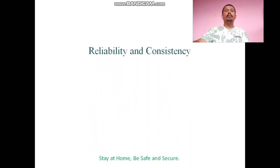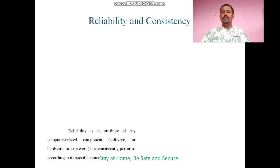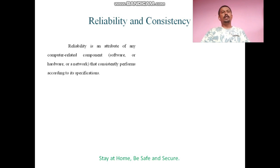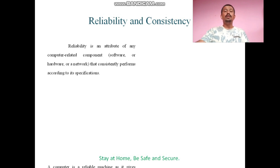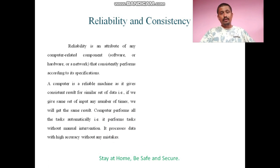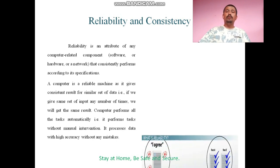The next feature of a computer is reliability and consistency. Reliability is the feature of a computer which means that computers can be trusted. Reliability is an attribute of any computer-related component — whether software, hardware, or a network — that consistently performs according to its specification. A computer is a reliable machine as it gives consistent results for a similar set of data. If we give the same set of input any number of times, we will get the same result.